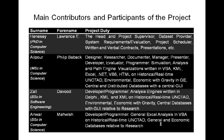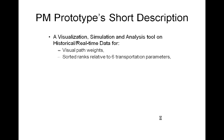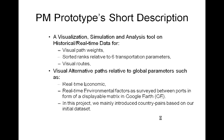The main participants of this project are the following. The four of us have been working over the last three months on this project and we hope the results are of interest to many members of the academic community. In a short description of the prototype, it is a visualization, simulation, and analysis tool on historical and real-time data for visual pathways, sorted ranks relative to six transportation parameters, visual routes, and visual alternative paths relative to global parameters such as real-time economic and environmental factors.